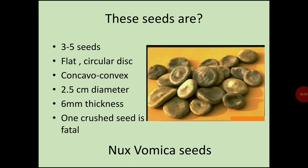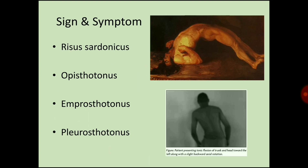These seeds are nux vomica seeds. One fruit contains three to five seeds. They are flat, circular, and disc-shaped, concavo-convex. Diameter is around 2.5 centimeters, thickness is 6 millimeters, and one crushed seed is fatal.